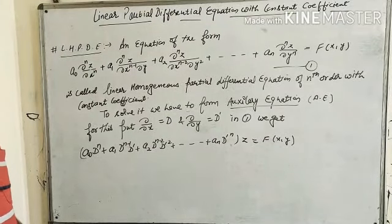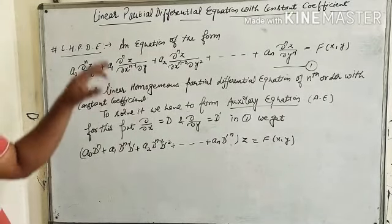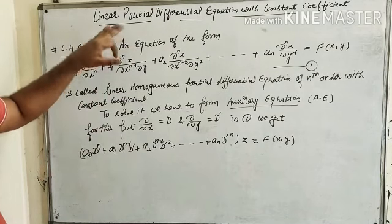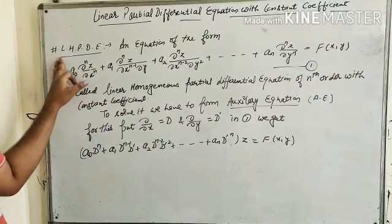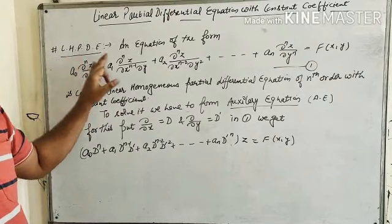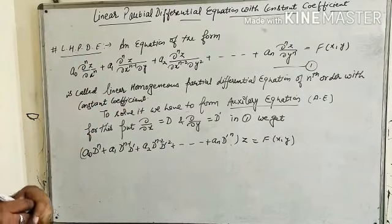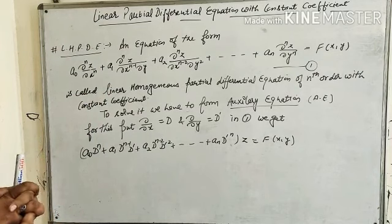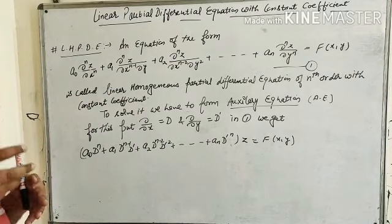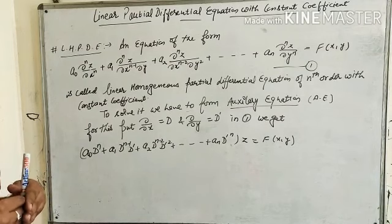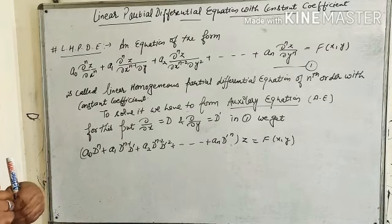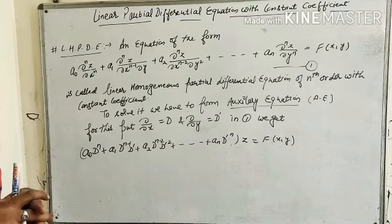Hello friends. This is another lecture on linear partial differential equations with constant coefficients — specifically, linear homogeneous partial differential equations. A differential equation where we differentiate a function partially with respect to any one variable, taking another as a constant, is known as a partial differential equation.